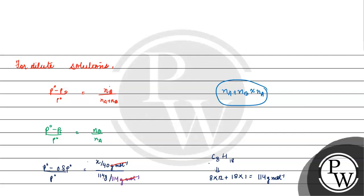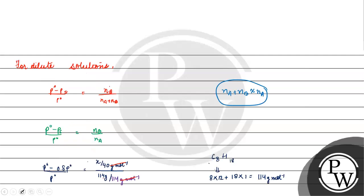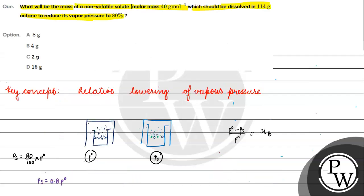This gives us 0.2 p0 divided by p0 equals (x divided by 40) divided by 1. So 0.2 equals x divided by 40, which means x equals 8 grams. The correct answer for this question is Option A. I hope you understood it well. Thank you, all the best.